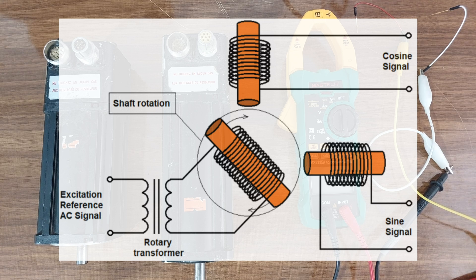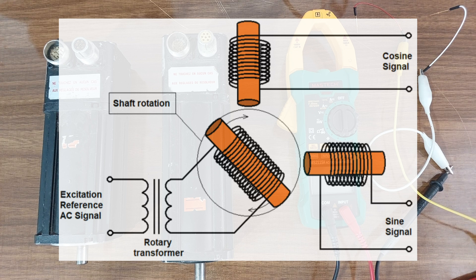The rotor coil is excited through a rotary transformer. We apply an AC excitation voltage to this rotary transformer to excite the rotor coil. The amplitude and frequency of the AC signal is different for different resolvers. The range of the frequency can vary from one kilohertz to ten kilohertz, and there is also a range for the amplitude of the applied signal.